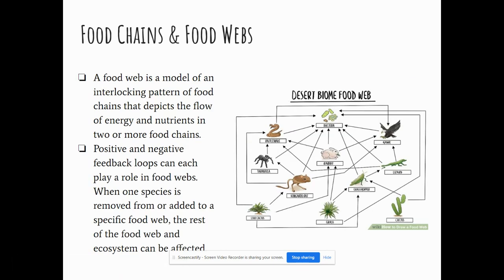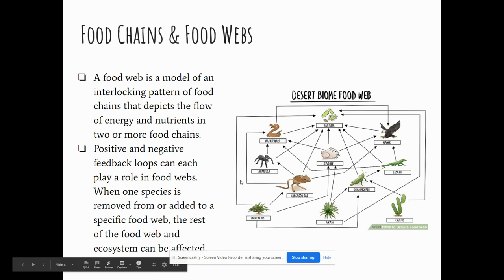Starting off, we are looking at food chains and food webs. Just remember that a food web is basically just a bunch of food chains put together. We'll look at the interactions between a few organisms, but in real life, ecosystems are a lot more complex, which is why we look at the more complex food webs. A food web shows the interlocking pattern of these food chains.